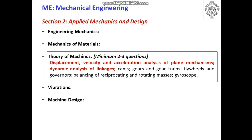Now if we see the GATE syllabus, the paper code is ME — Mechanical Engineering — and in Section 2, Applied Mechanics and Design, the major areas are Engineering Mechanics, Mechanics of Materials, Theory of Machines, Vibrations, and Machine Design. Concerning Theory of Machines, there will be a minimum of 2 to 3 questions asked, which includes displacement, velocity and acceleration analysis of plane mechanisms, and definitely one question on degrees of freedom. There will also be questions on cams, gear and gear trains, flywheels and governors, balancing of reciprocating and rotating masses, and gyroscopes.